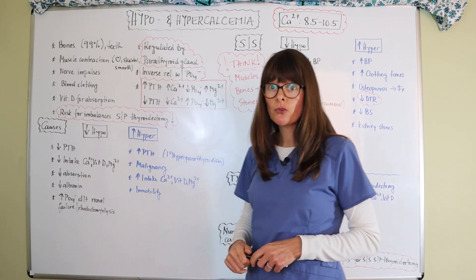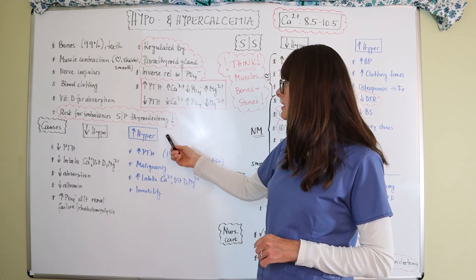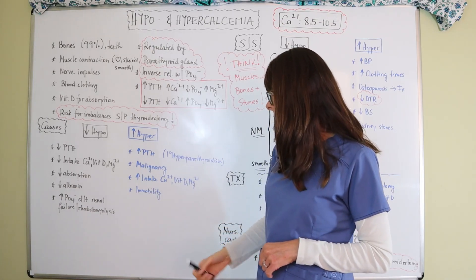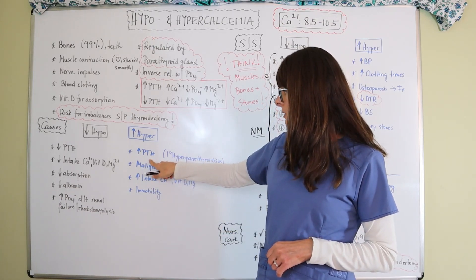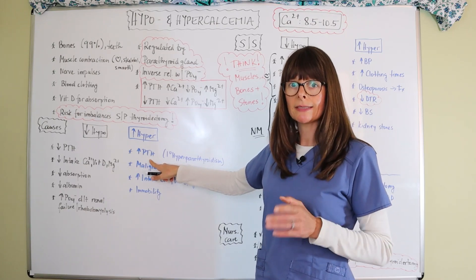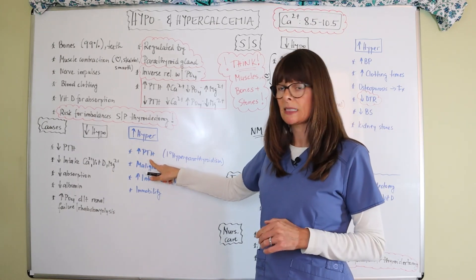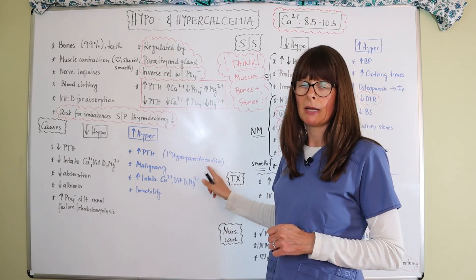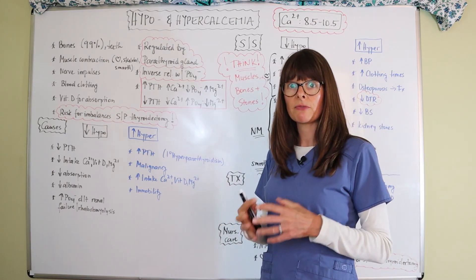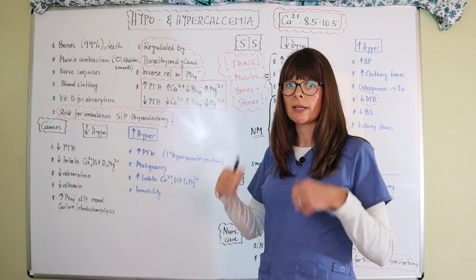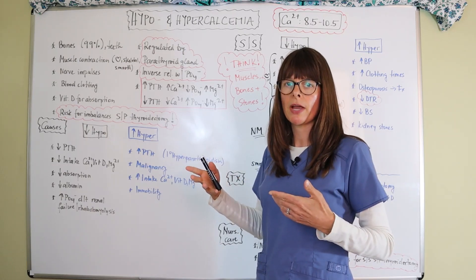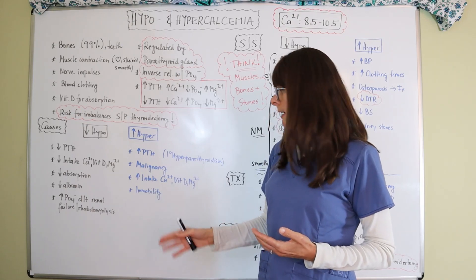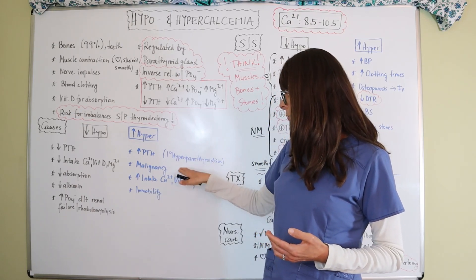Now on the contrary side here, hypercalcemia, so increase in calcium levels in the bloodstream would be again, an increase in parathyroid hormone. And that's the most common cause actually. And that is because of primary hyperparathyroidism. So that means that the gland itself is malfunctioning for whatever reason and just produces too much of that parathyroid hormone, which then leads to hypercalcemia. And we'll talk about the treatment and solution here in a little bit.